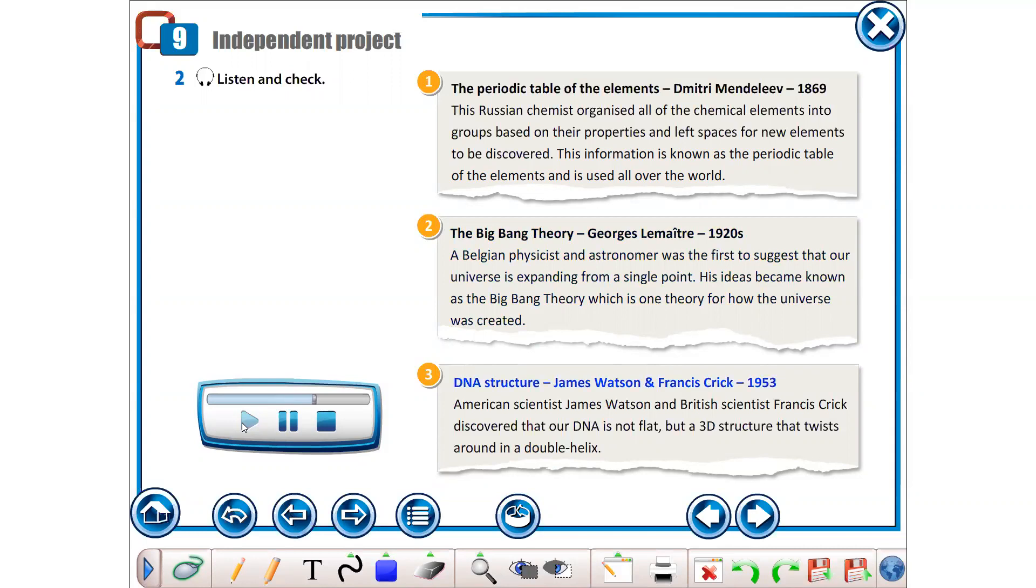DNA Structure. James Watson and Francis Crick, 1953. American scientist James Watson and British scientist Francis Crick discovered that our DNA is not flat, but a 3D structure that twists around in a double helix.